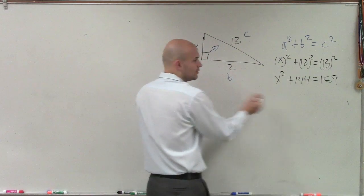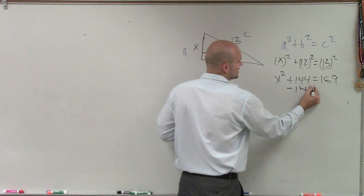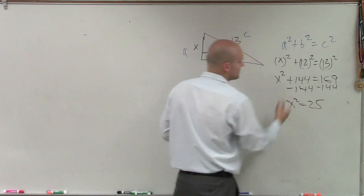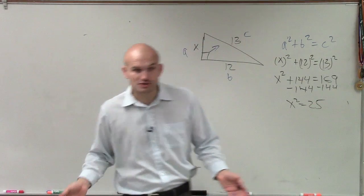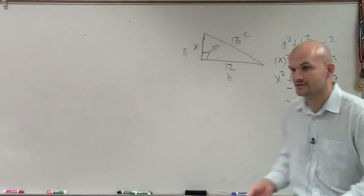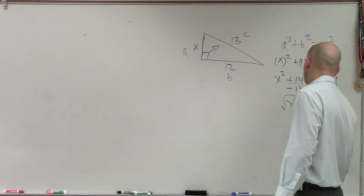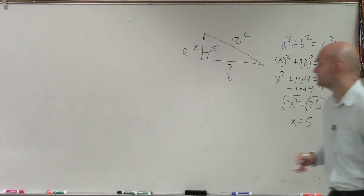Now, this is an equation, so I solve for X squared. So therefore, X squared equals 25. Now, to undo the squaring of X, I need to take the square root. So therefore, X equals 5.